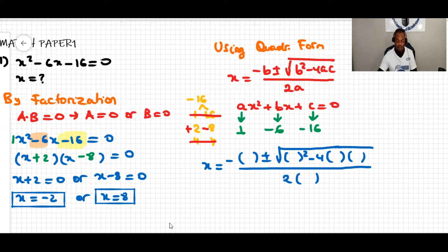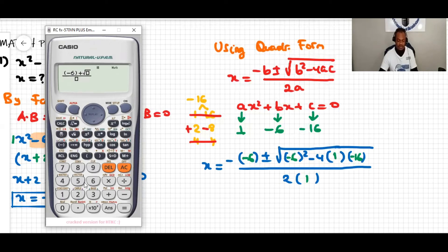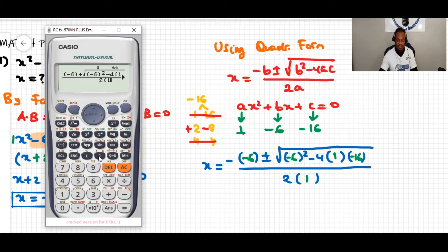Substituting into the formula, x equals negative (−6) plus or minus square root of (−6) squared minus 4 times 1 times (−16), all over 2 times 1. We work this out in the calculator: the expression under the square root is (−6) squared minus 4 times 1 times (−16), over 2 times 1.